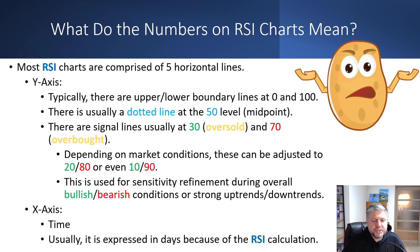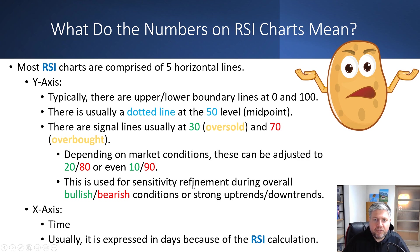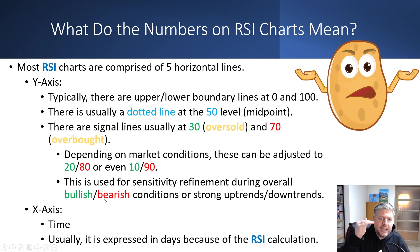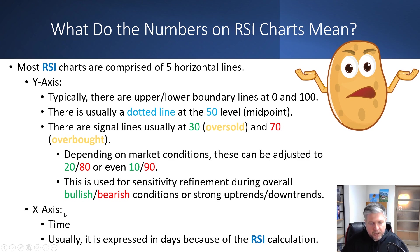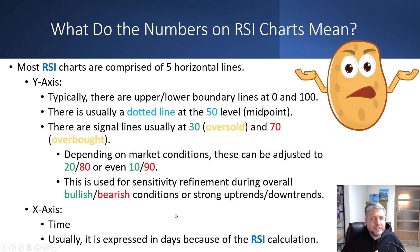Depending on market conditions and individual security conditions, these numbers might be 20 and 80, or even 10 and 90. These adjustments are mostly used for sensitivity refinement during overall bullish or bearish conditions, or strong uptrends or downtrends. Imagine a stock constantly trading above 70 in overbought territory but not really moving — you might want to move that level up to 80 or 90 to get a better signal of when there's going to be a reversal. On the x-axis, as always, we have time — typically expressed in days.